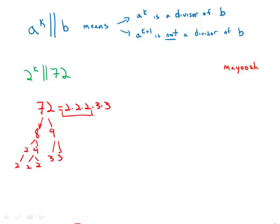So we have three factors of 2 that go into 72. So 2 to the third would be a divisor of 72. 2 to the fourth would not be a divisor of 72. And so that means that here k has to equal 3. And this is answer choice B.